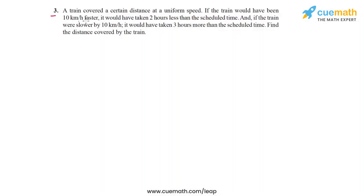In question 3 of this exercise, the problem statement says a train covered a certain distance at a uniform speed. If the train would have been 10 kilometers per hour faster, it would have taken two hours less than the scheduled time. And if the train were slower by 10 kilometers per hour, it would have taken three hours more than the scheduled time. We need to find the distance covered by the train.